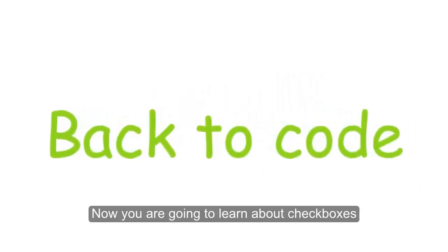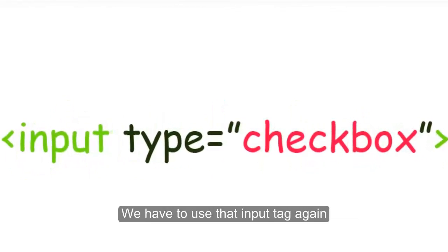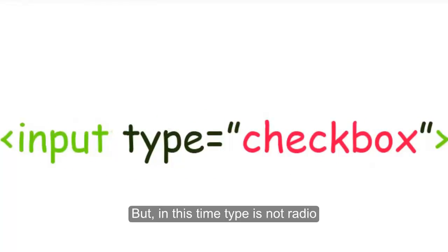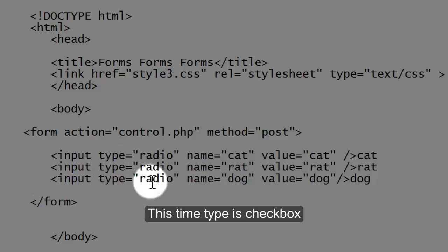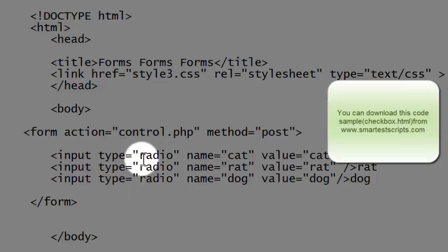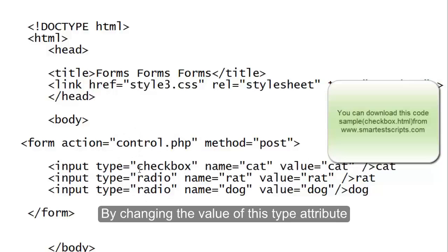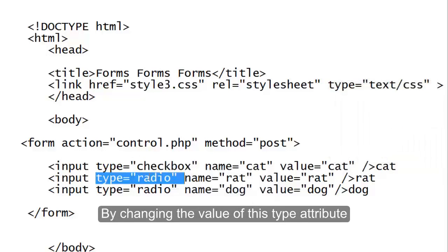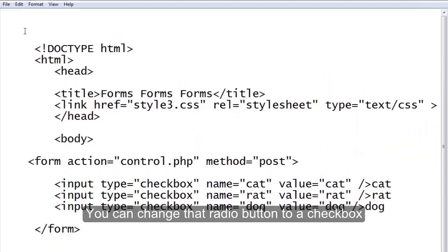Now we are going to learn about checkboxes. It's very simple — we have to use the input tag again, but this time the type is not radio; this time the type is checkbox. It's very simple: only the type makes the changes. By changing the value of the type attribute, you can change a radio button to a checkbox.